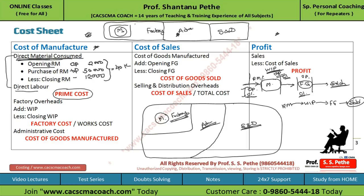Now there is also a direct labor cost — let's say Rs. 10,000. So adding direct material consumed of Rs. 40,000 and direct labor of Rs. 10,000, you get a prime cost of Rs. 50,000 for the goods manufactured during the period.